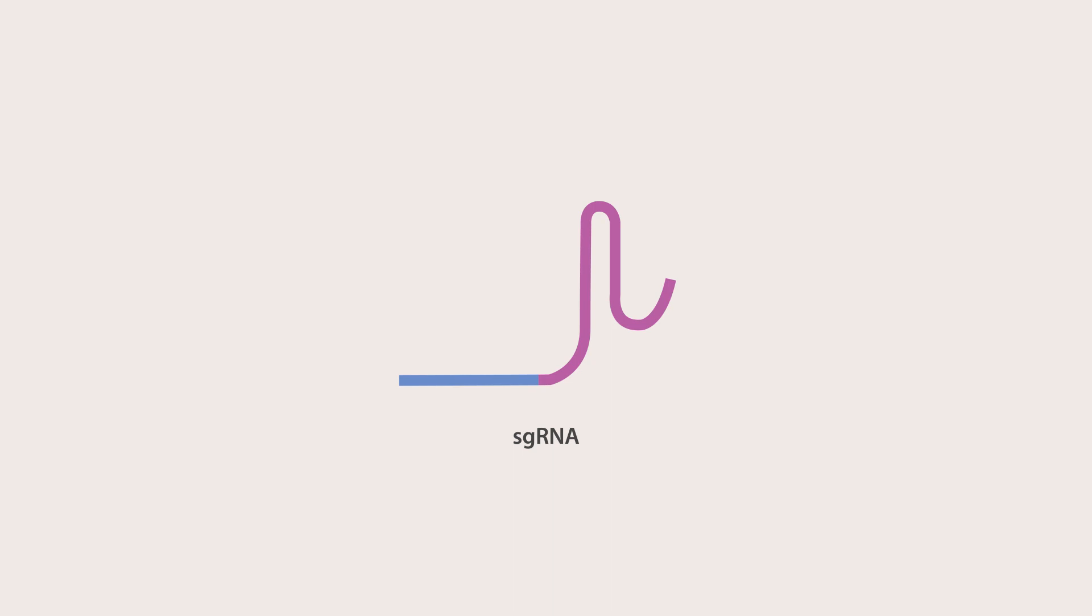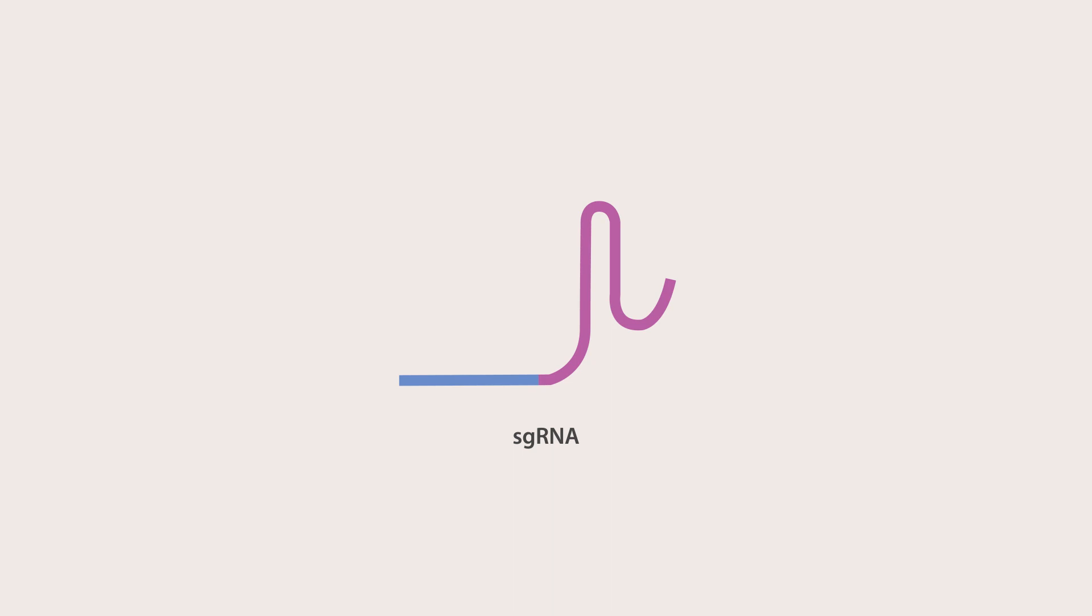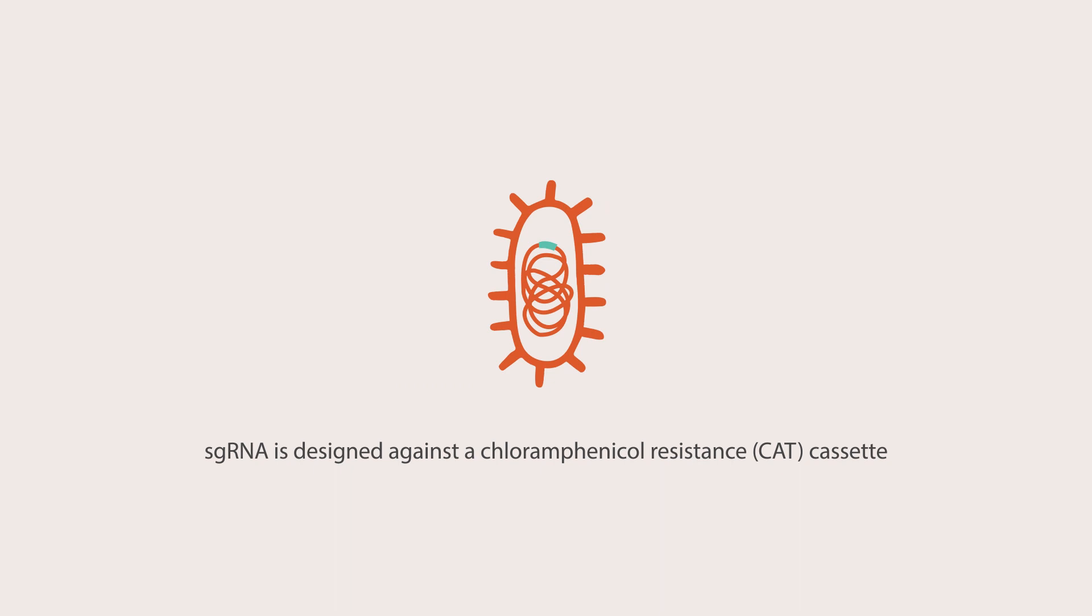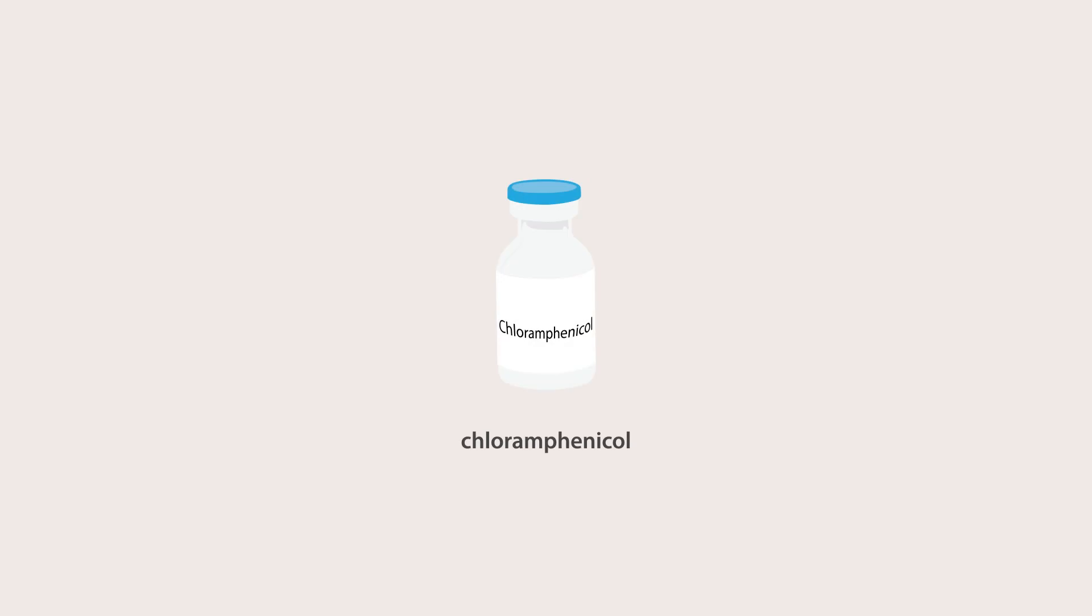First, sgRNAs are required to guide the Cas9 nuclease to the target locus. An sgRNA was designed against a chloramphenicol acetyltransferase cassette, or CAT gene, which was previously introduced into the E. coli genome. When intact, this gene gives resistance to the antibiotic chloramphenicol. The sgRNA was cloned into the p-target plasmid.